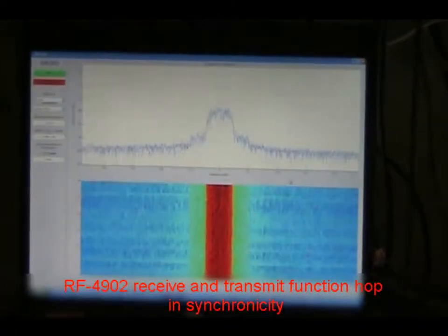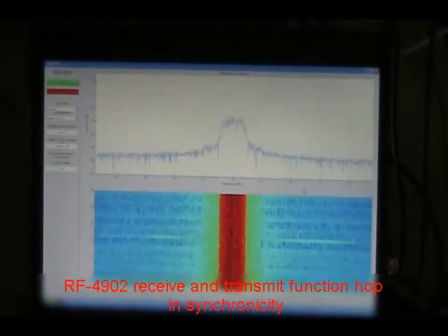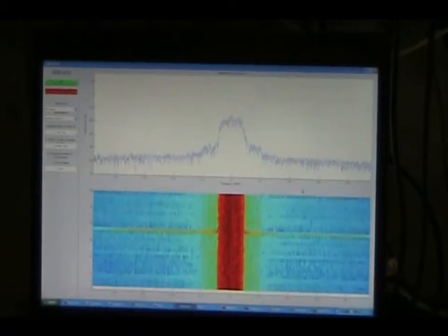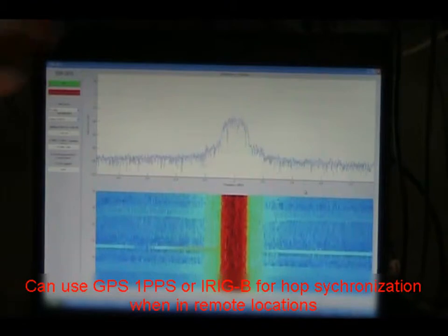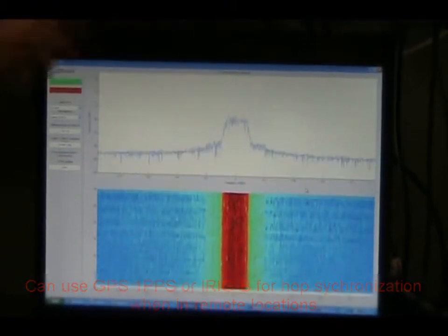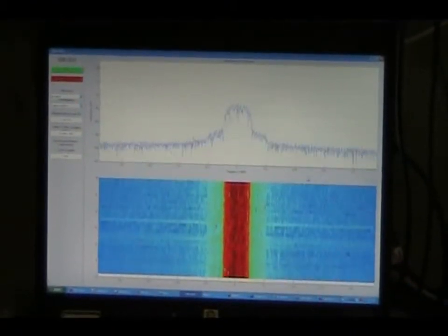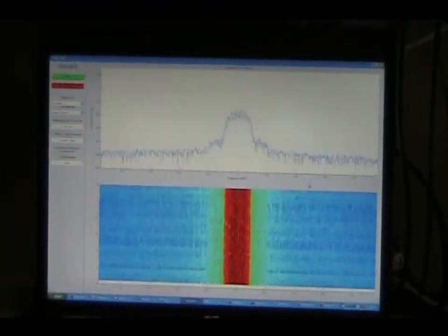The receiver is hopping in synchronicity with the transmitter. The RF4902 can also use GPS one pulse per second or IRIG-B to tell it what time it is for hop synchronization between the transmitter and receiver that are in remote locations.